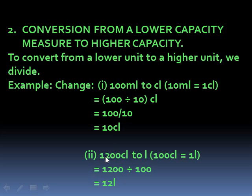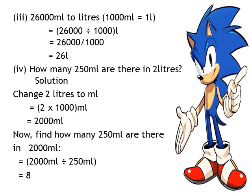Example 2: Convert 1,200 centiliters to liters. How many centiliters make one liter? 100. We are converting to a bigger unit, so we divide: 1,200 divided by 100 gives us 12 liters. Example 3: Convert 26,000 milliliters to liters. How many milliliters make one liter? 1,000. So 26,000 divided by 1,000 gives us 26 liters.